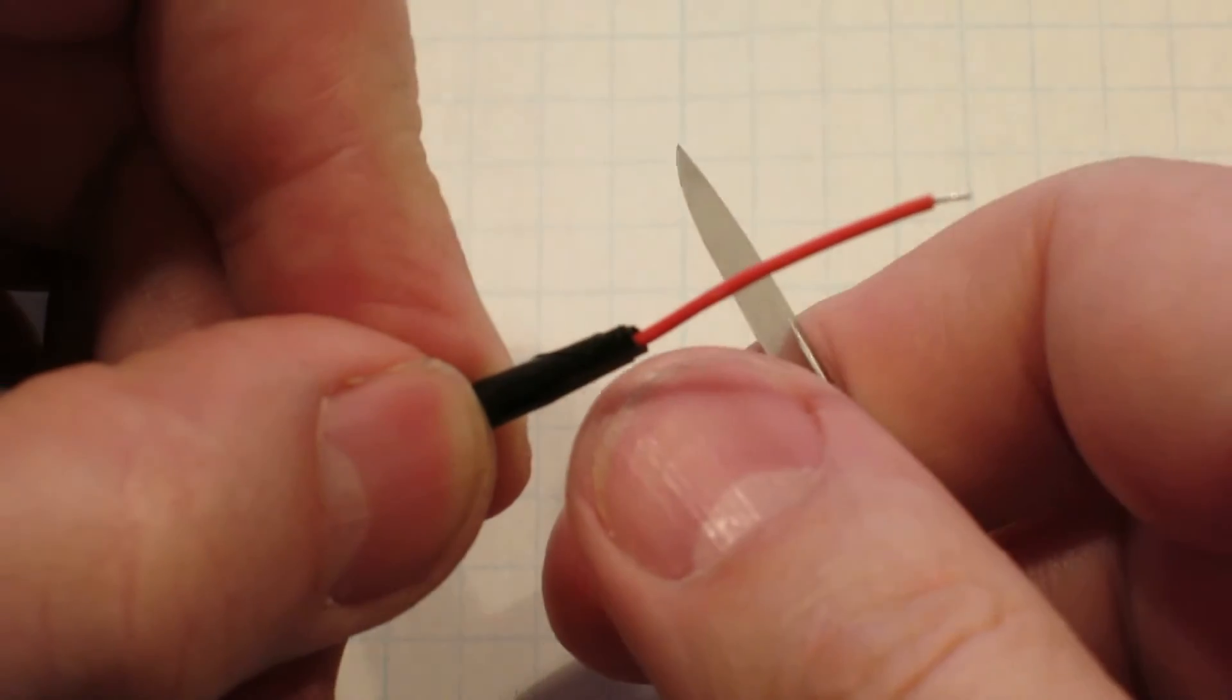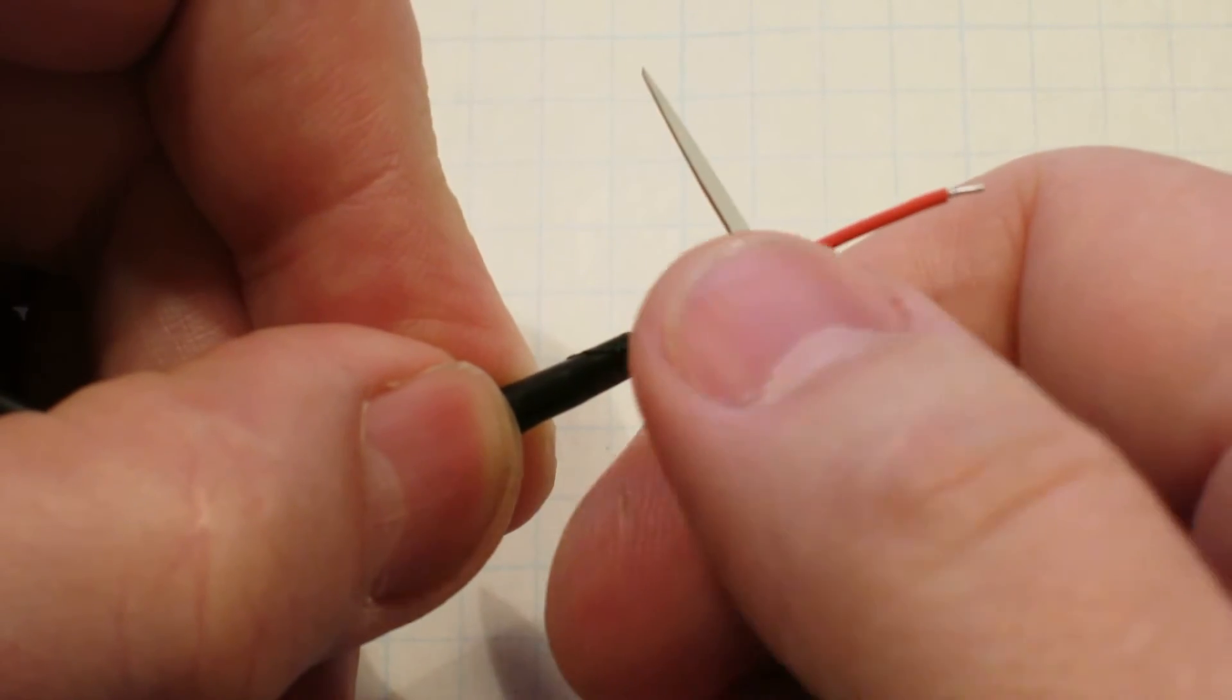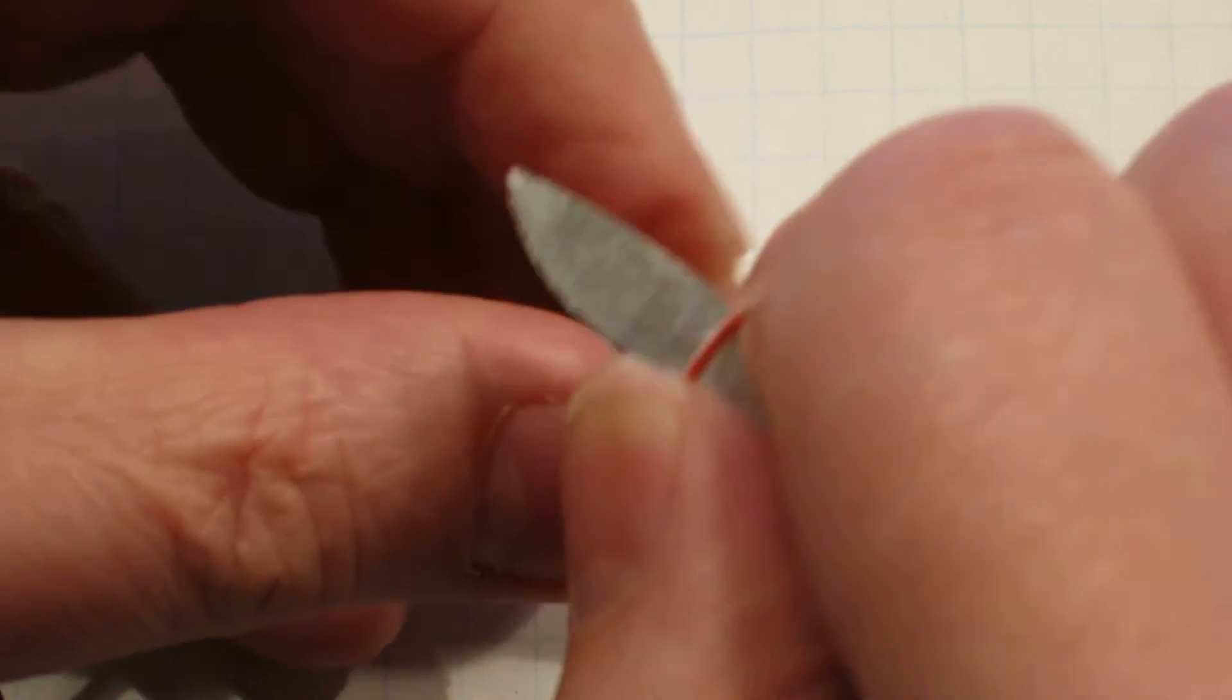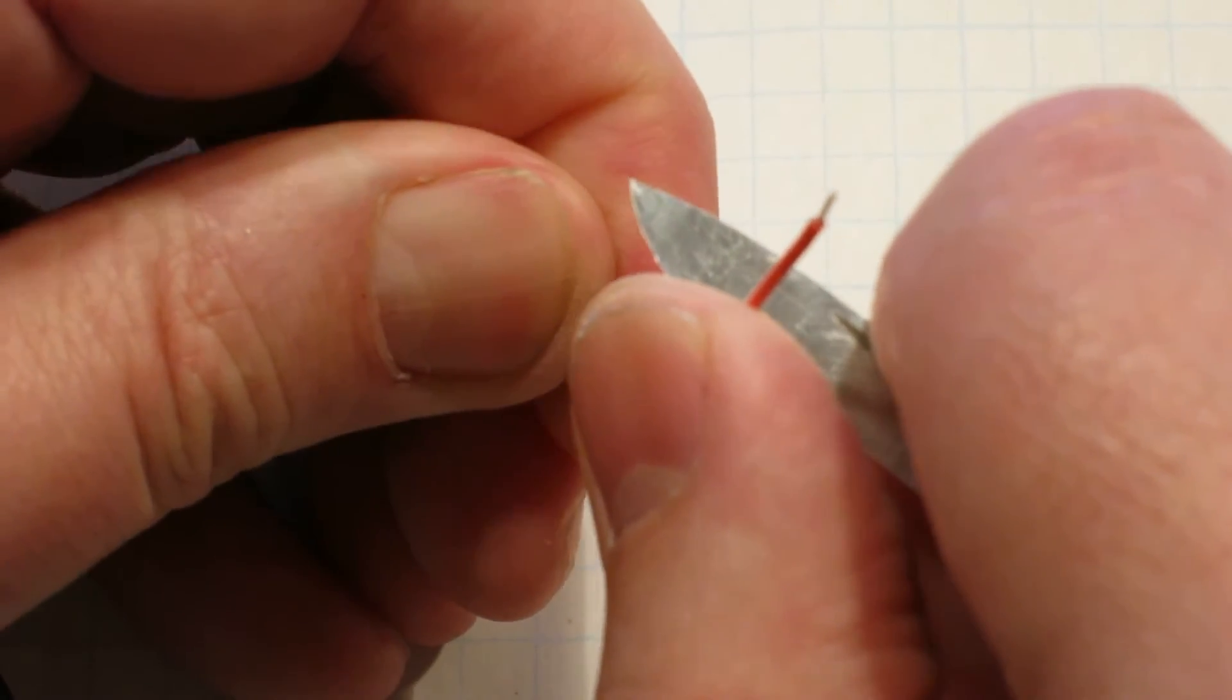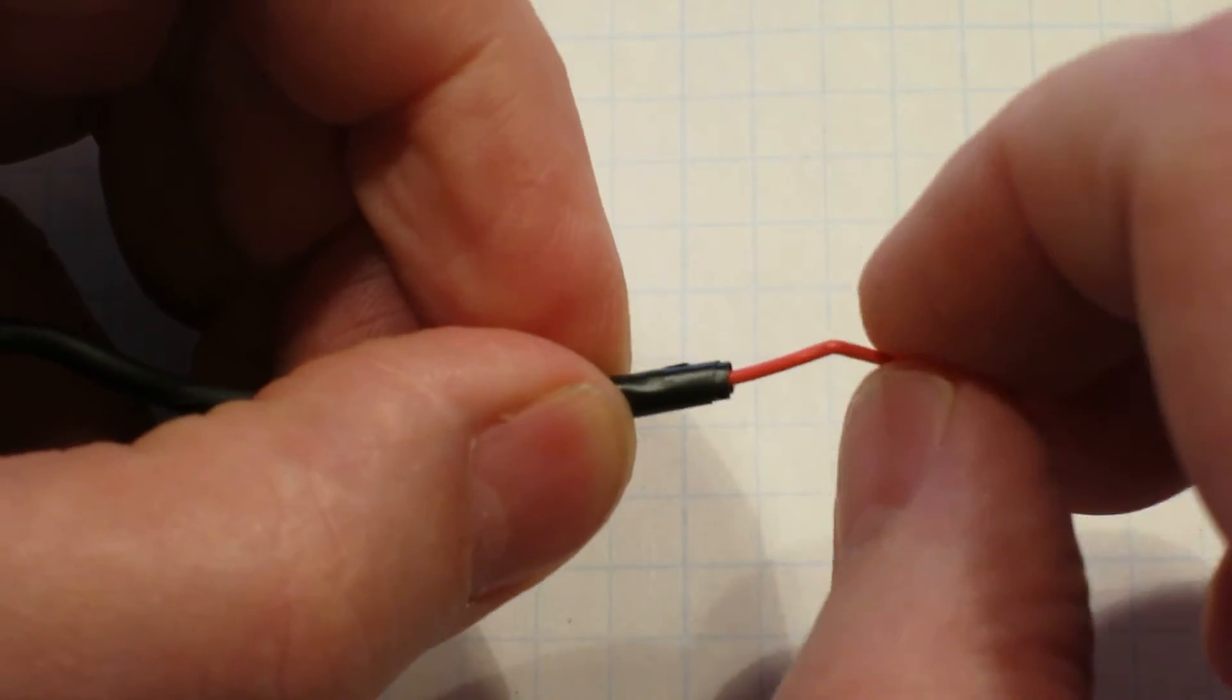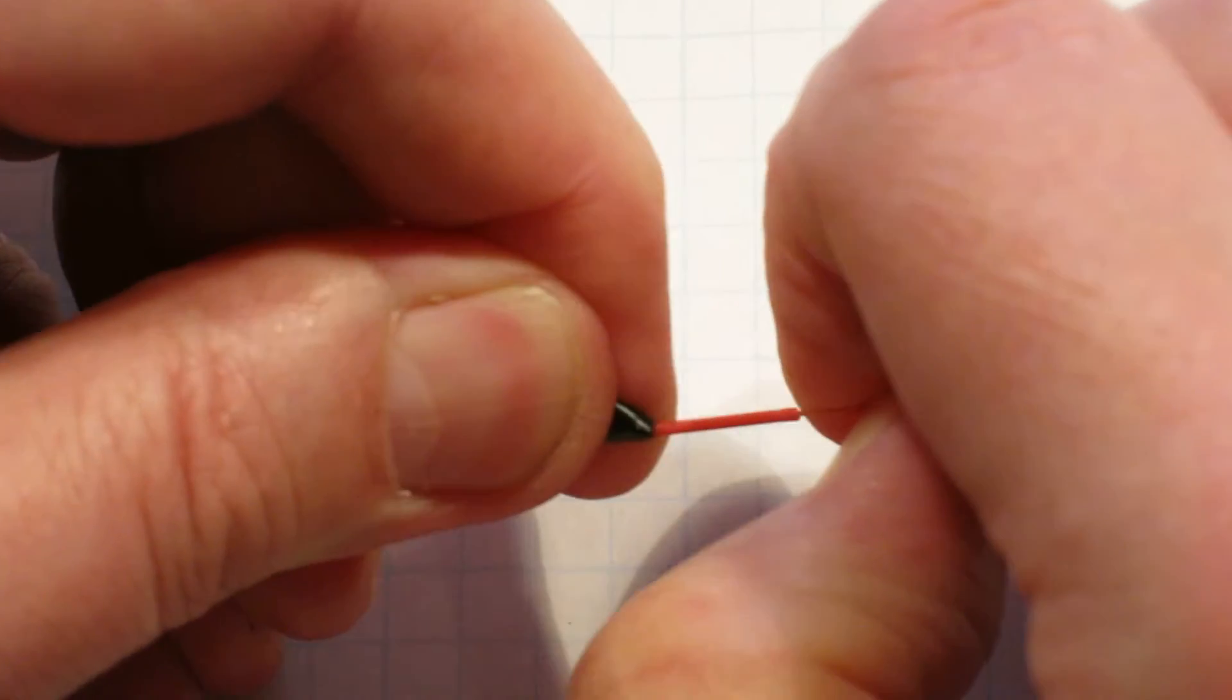Now we need to strip some of the insulation off of the red and white wire. Do the same thing: just gently roll that wire against the knife. You can just pull this red insulation off.